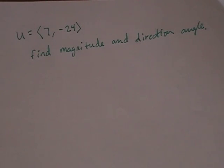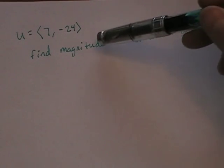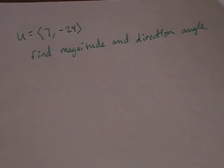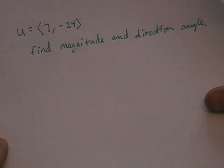Okay, so someone asked me the other day, if I have a vector and I want to find the magnitude and the direction angle, how do I do that? And so I thought this would be a fun video to do.